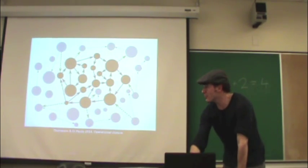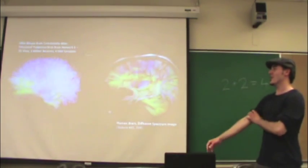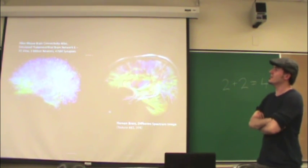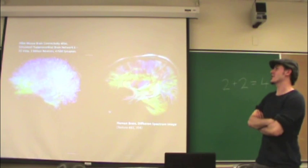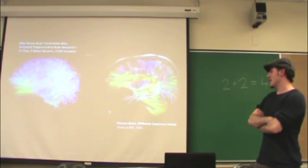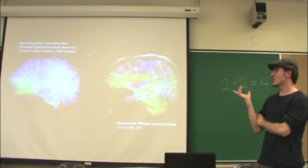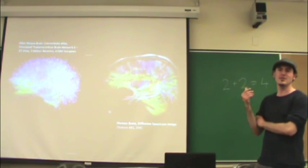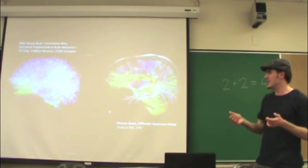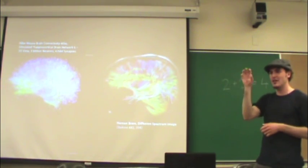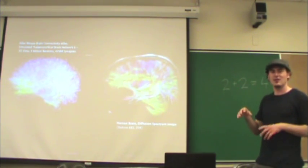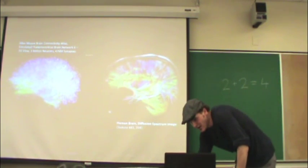It becomes very non-informative to try to isolate any part of the system and say 'this is a representation, this is responsible for this kind of information processing.' To the left we have a simulated thalamocortical brain network from the Allen Mouse Brain Connectivity Atlas, and here a diffusion spectrum image of the human brain from Nature. Everything is connected to everything else, which lends weight to the idea that maybe it's impossible to isolate even a distributed representation and say 'this is a representation.'